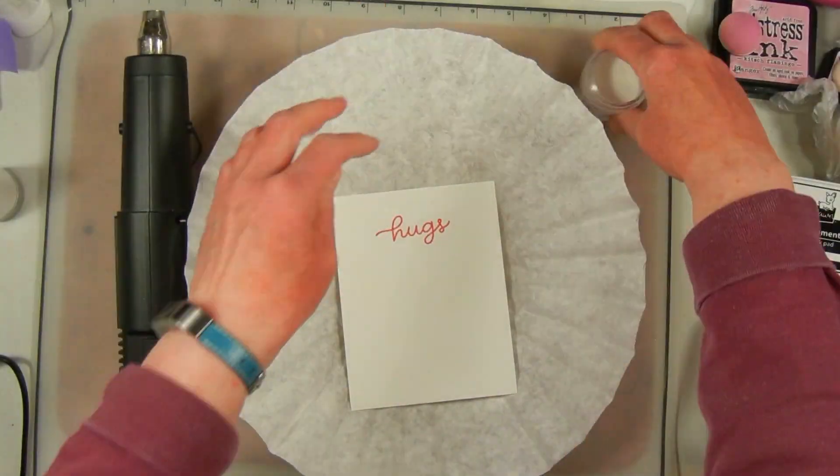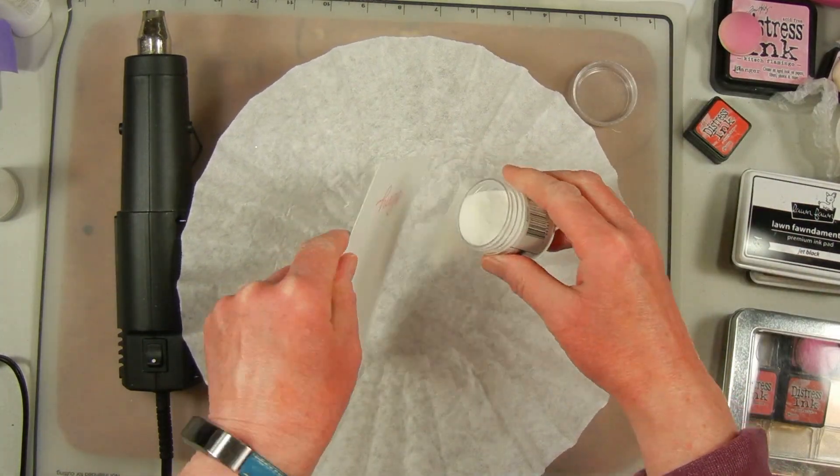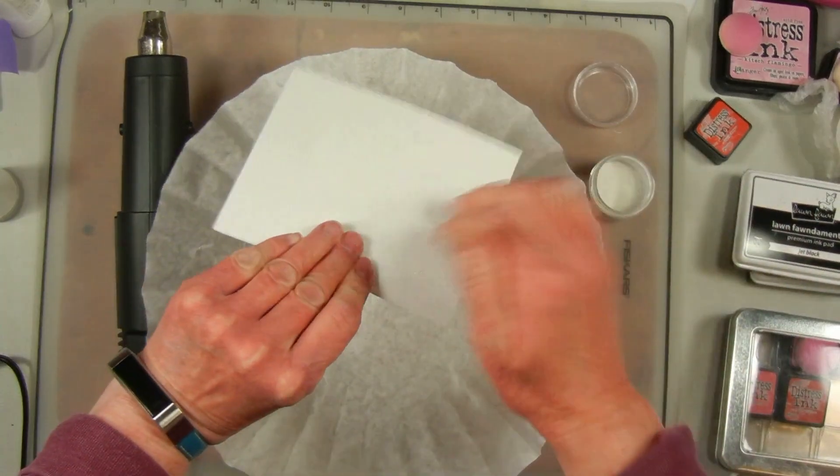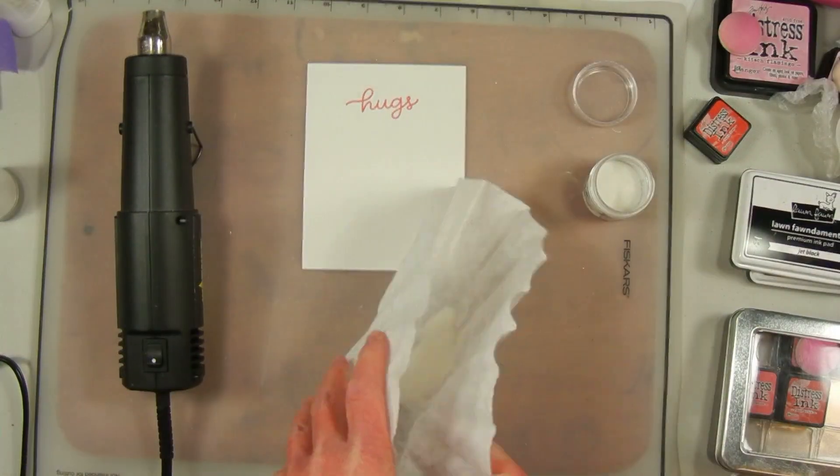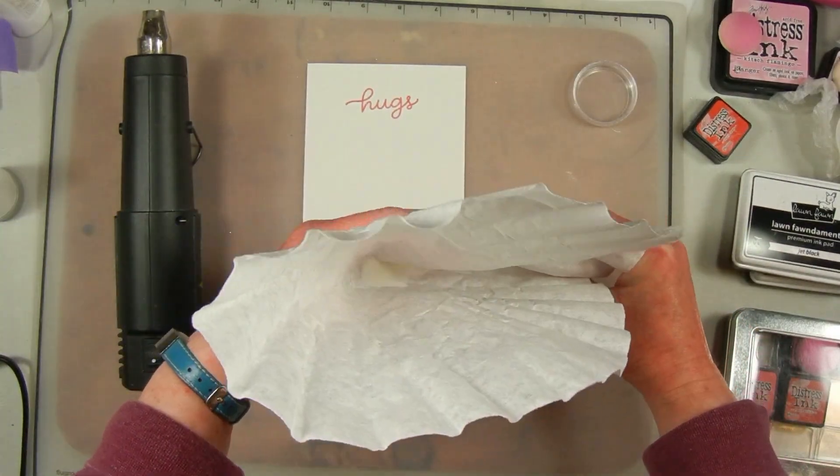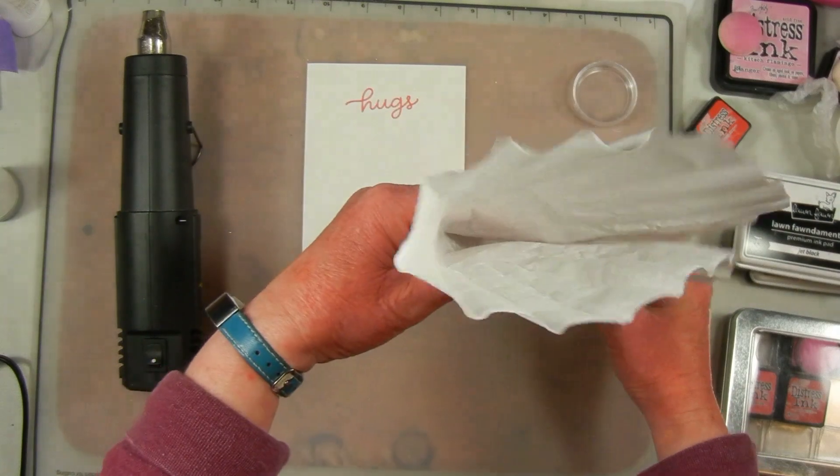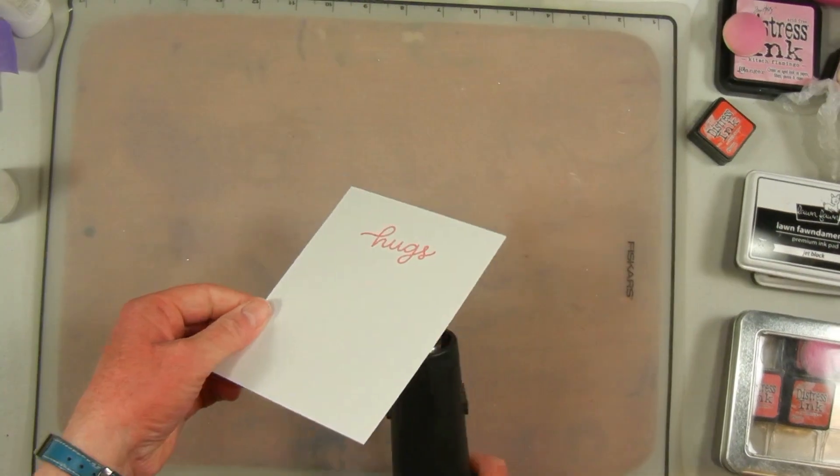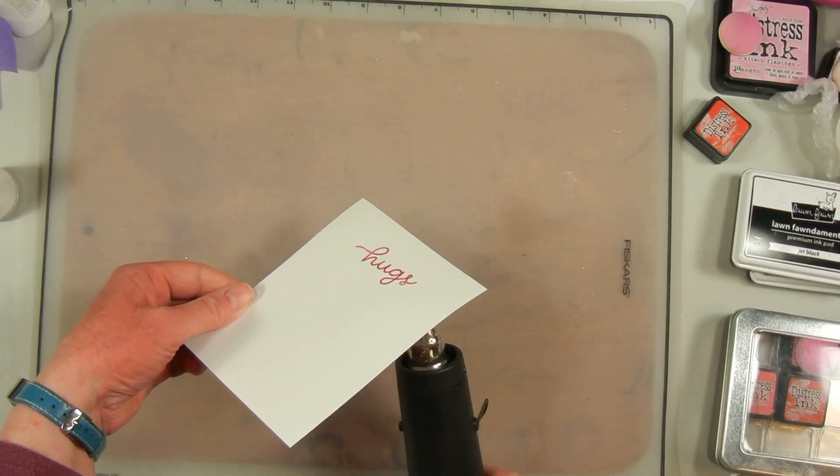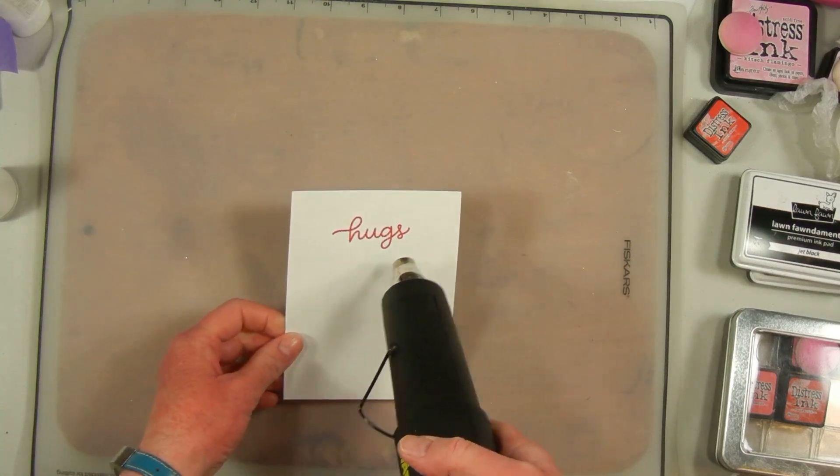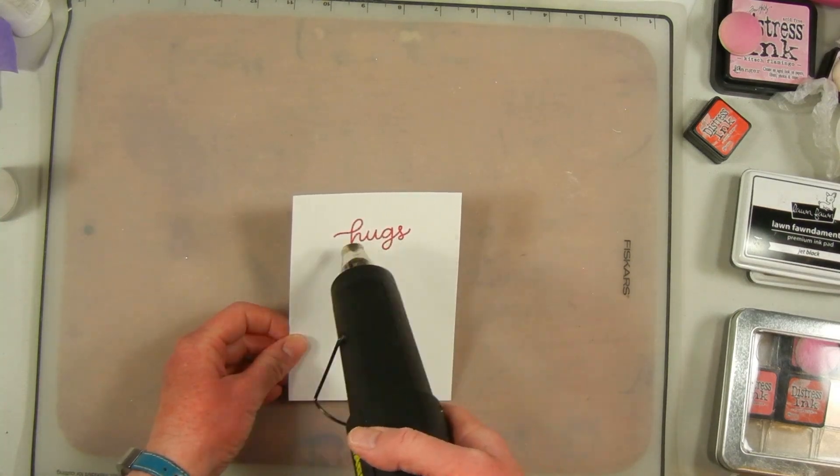In any case, I'm going ahead and doing my sentiment and I'm going to emboss it, so I'm using Distress Ink because that stays wet long enough to do embossing on. I'm just stamping with a Hello Bluebird stamp set, just the word hugs, and I'm going to go over that with some clear embossing powder and then heat it with my heat tool.